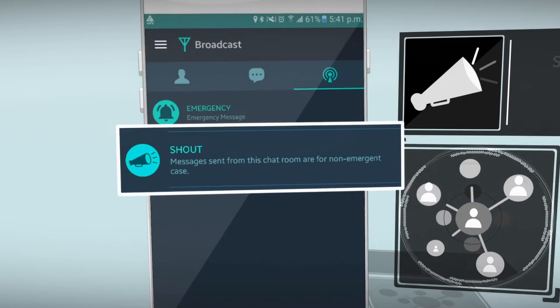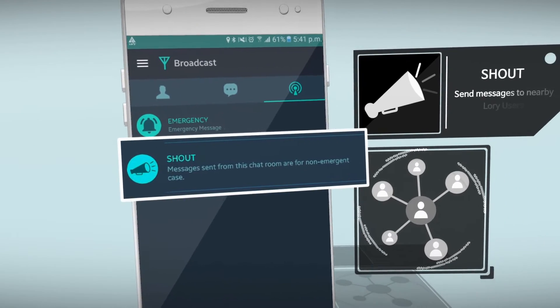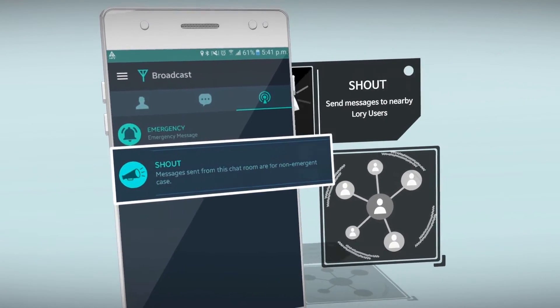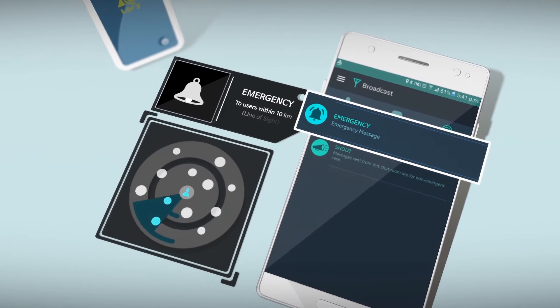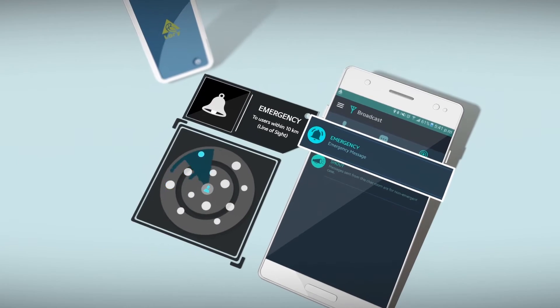Shout, a feature that allows you to send messages to nearby LORI users. Even in an emergency, Himalaya Talk users can send rescue messages to a nearby party within 10 km.